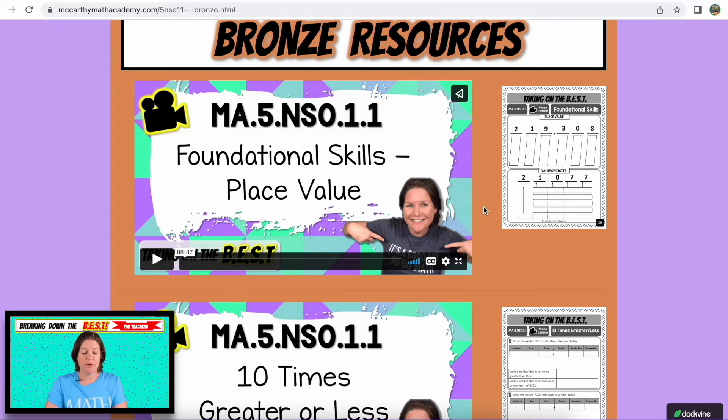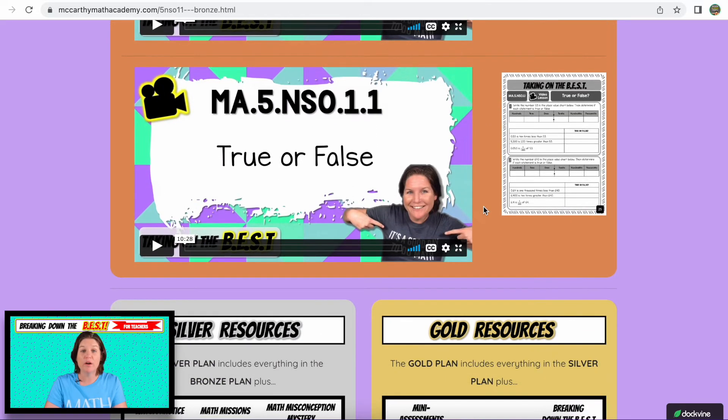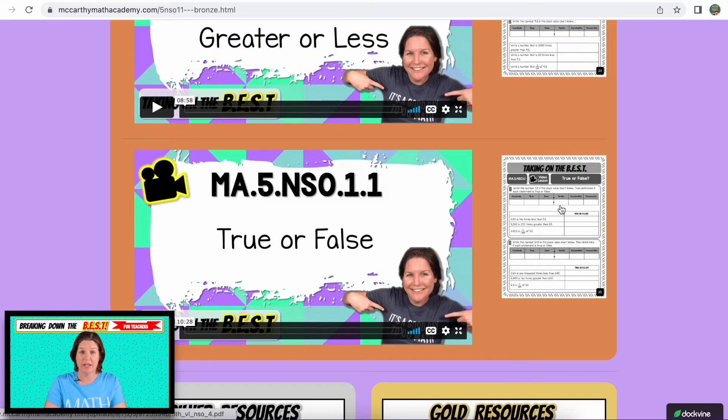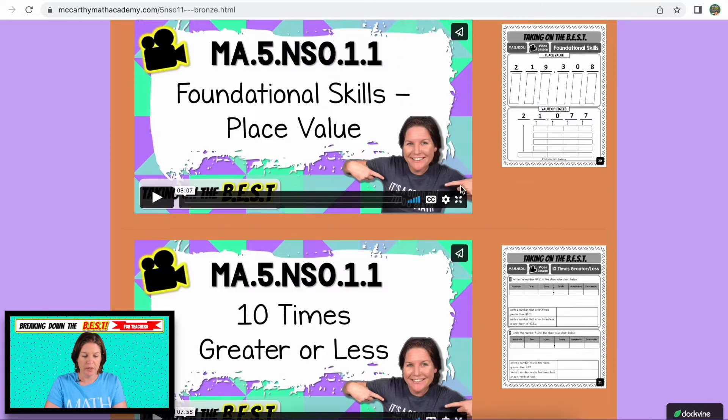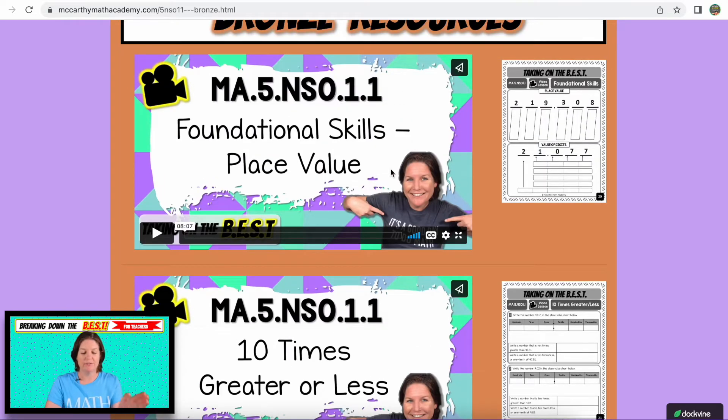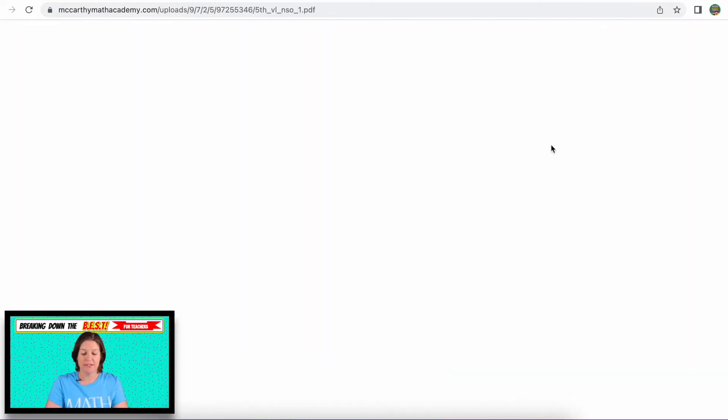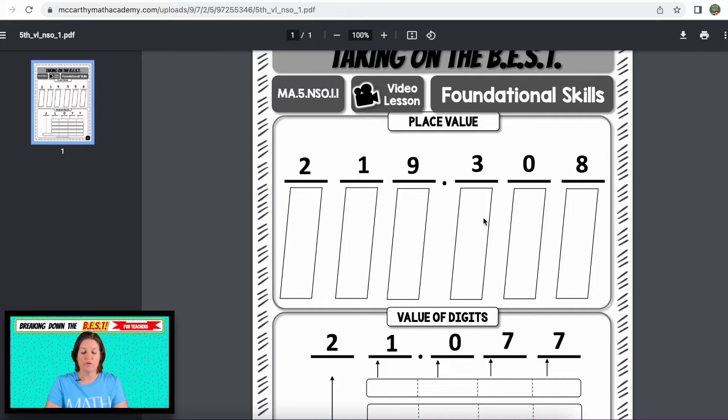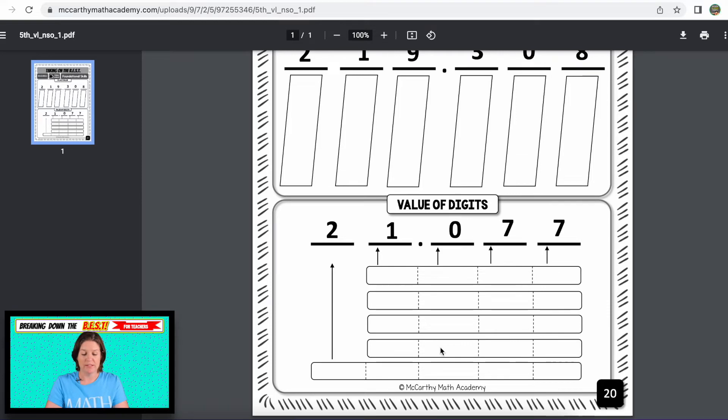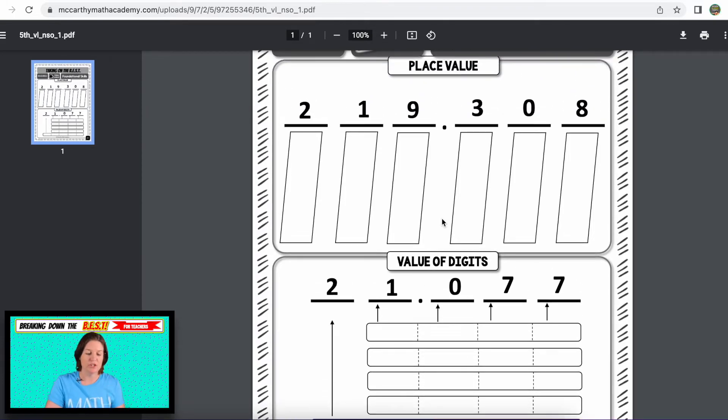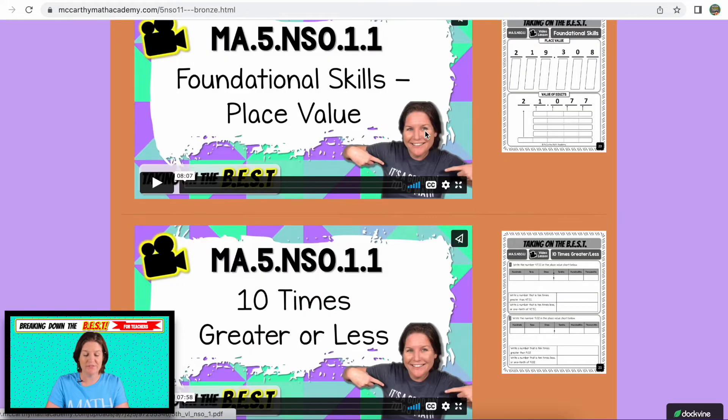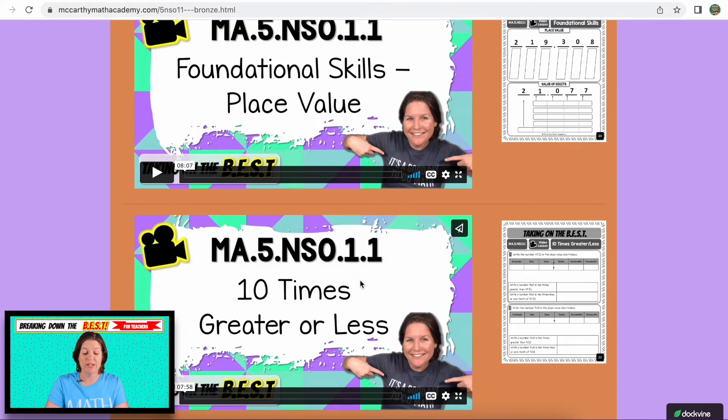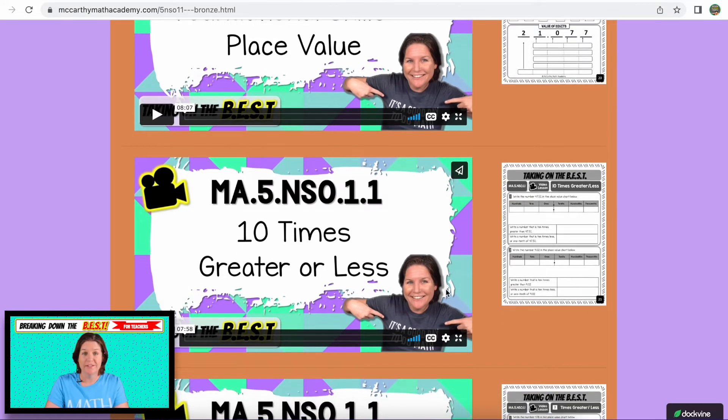So the bronze resources, you have one, two, three, four video lessons and four printable pages that go with each video lesson. So the first one before we even kick off breaking down the value of digits, we're explicitly teaching the different places here. So you can see here's the printable where we're going over what is this place, what's the name of each place. And then what's the value of these digits in this place and talking about the word digit and just getting them re-acclimated with the vocabulary that they need to be successful with the standard, just giving them a sense of foundation.